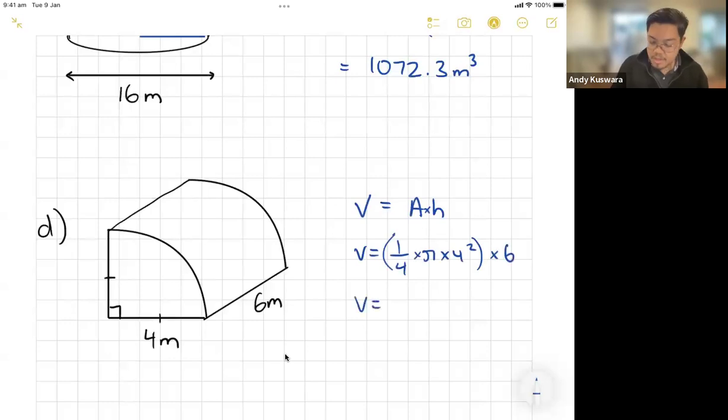There's the area of the front face. I'm just going to multiply it by how far back it goes. That is as simple as can be: one on four times pi times radius squared, and then multiply that by how far back it goes, which gives you a volume of 75.4 to one decimal place, meters cubed.